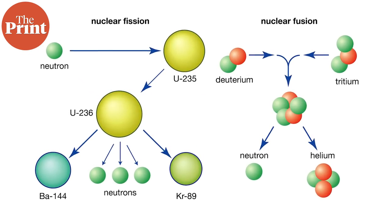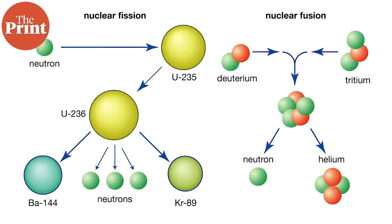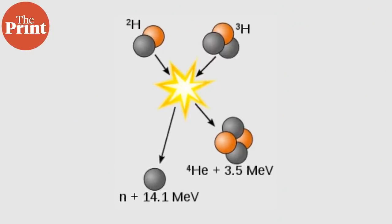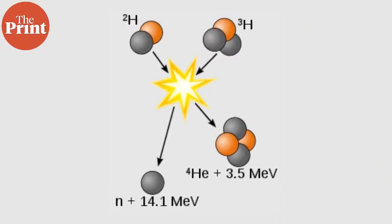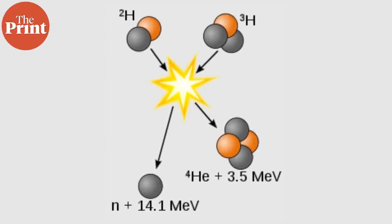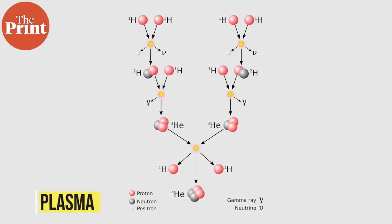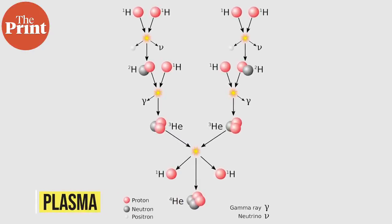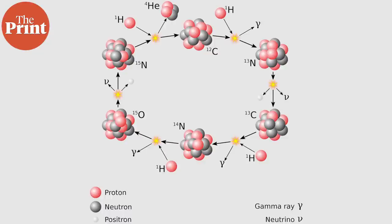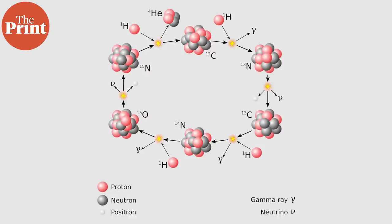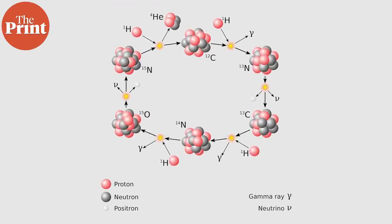For uranium-235, the fission products are typically two smaller isotopes of uranium, three high-speed neutrons, and vast amounts of energy that we harness. This heats water in the reactor and produces electricity. In this process, the high-speed neutrons that are released bombard other nuclei, and this process carries on causing a chain reaction. Fusion, on the other hand, takes place when two low-mass isotopes combine to form a higher mass nucleus under extreme pressure and temperature. This process needs enough time to produce plasma in a reactor, and plasma is one of the four fundamental states of matter after solid, liquid, and gas.